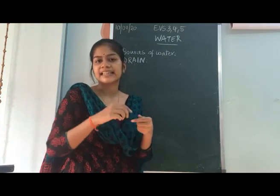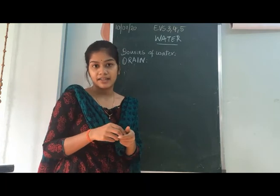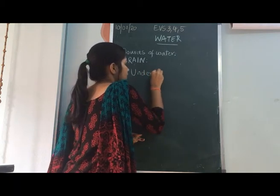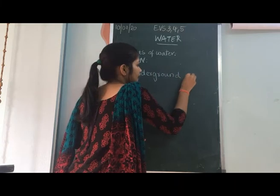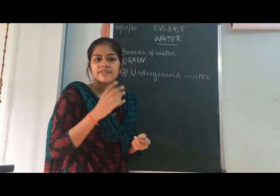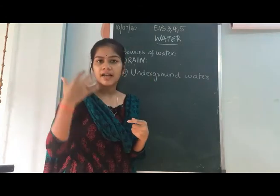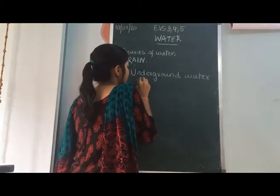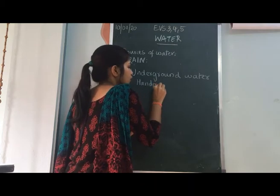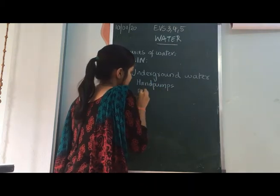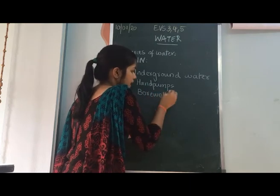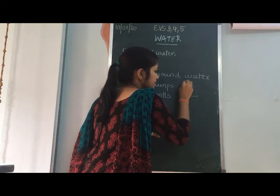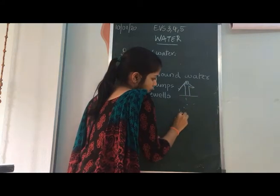Some of this rainwater goes inside the ground and collects there, forming underground water. Underground water means the rain which falls from the clouds goes deep into the ground and is stored there. We can access it using hand pumps or bore wells.